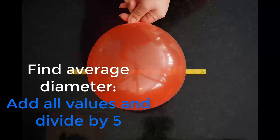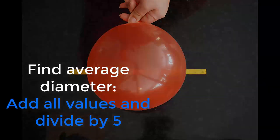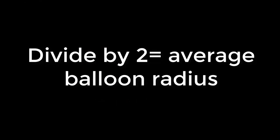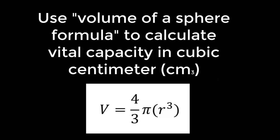To find the average balloon radius, divide that average diameter by 2. Then you'll use the volume of a sphere formula, which is in your lab. Take the radius you just found and cube it.